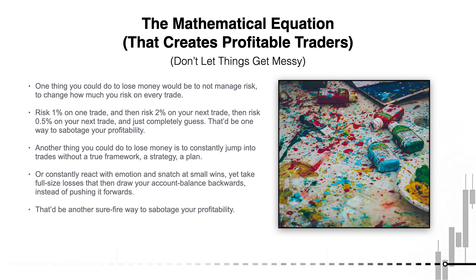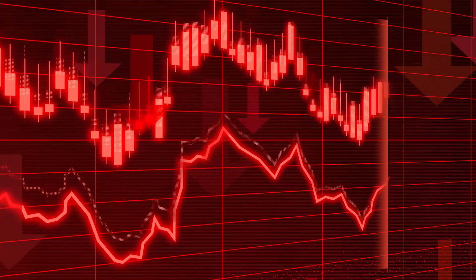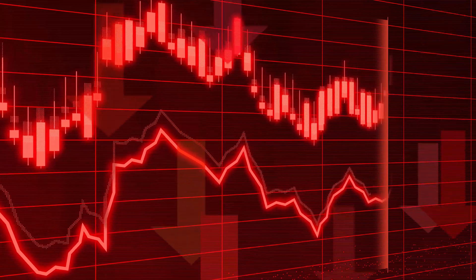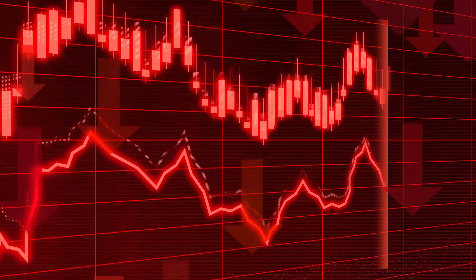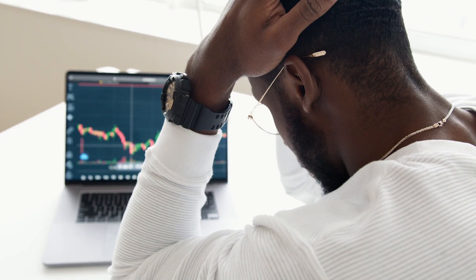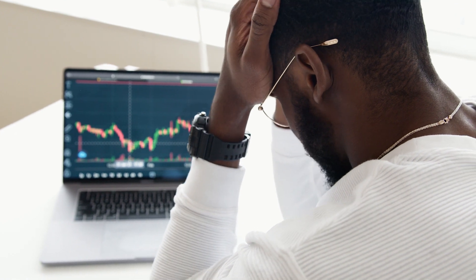Another thing that you could do to lose money is to constantly jump into trades without a true framework, without a strategy, without a plan. Or constantly react with emotion and snatch at small wins, yet take full-size losses that then draw your account balance right backwards and into the red, instead of pushing it forwards and into the green. That would be another surefire way to sabotage your profitability.